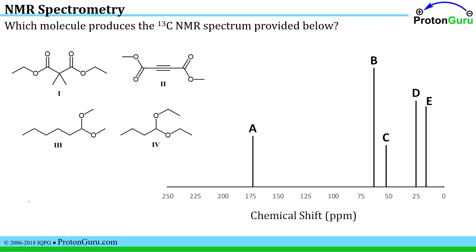Here's a typical type of multiple choice question. You're given a selection of molecules and a spectrum and asked to match which molecule could have produced that carbon-13 NMR spectrum. The first thing I would do in assessing a problem like this would be to look and see how many carbon signals I would expect to be produced if I took a spectrum of each compound here.